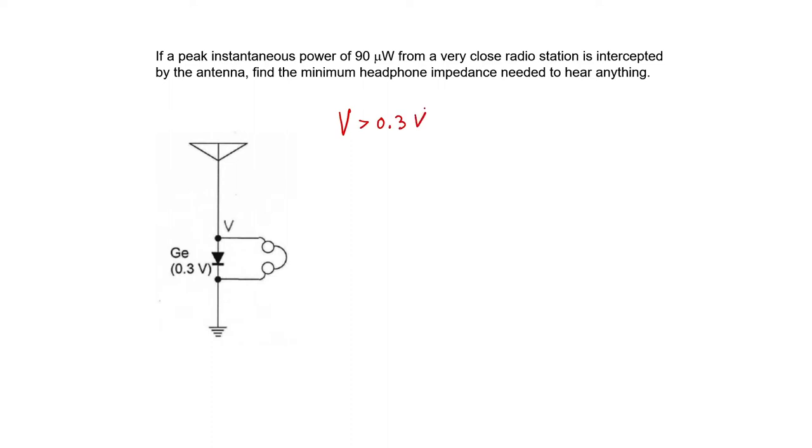We're told in the problem that the antenna intercepts 90 microwatts. It's important here to recall that a radio wave carries power. It doesn't carry voltage and it doesn't carry current. So watts is really the unit of power for radio waves, for lasers, or any type of electromagnetic radiation.